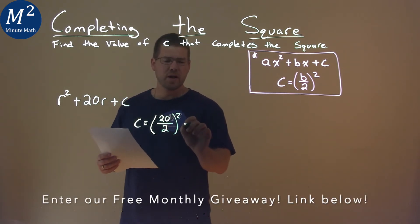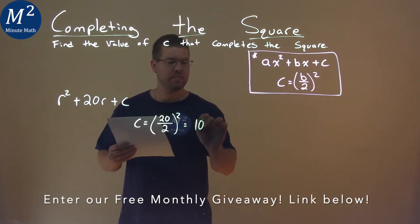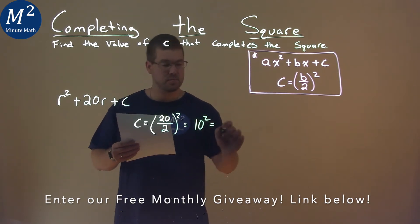Well, 20 divided by 2 is 10, and when we square 10, we get 100.